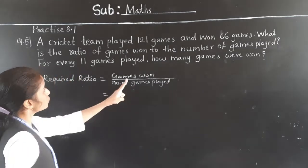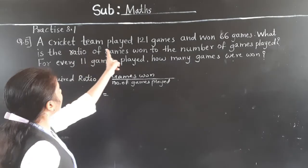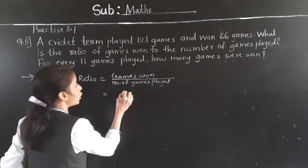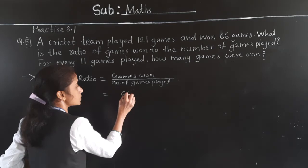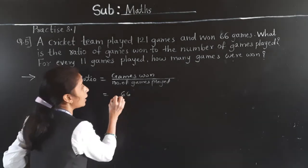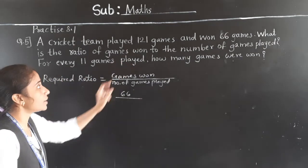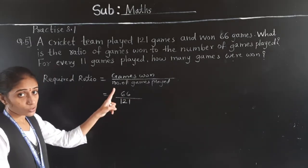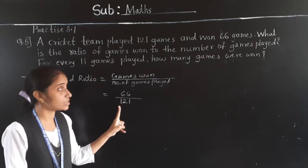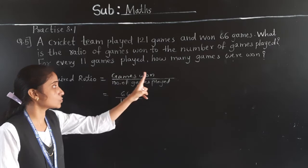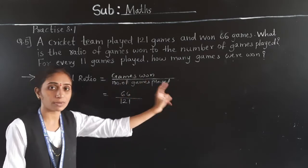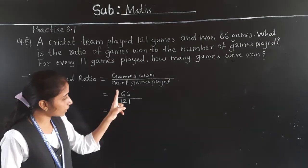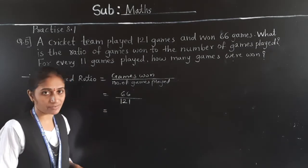How many games were won? 66 games. And the number of games played? 121 games. Now let's see — both numbers are divisible by 11.